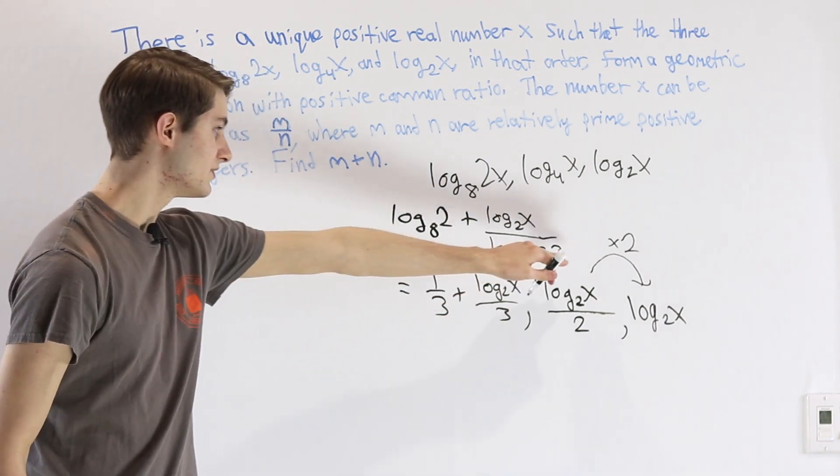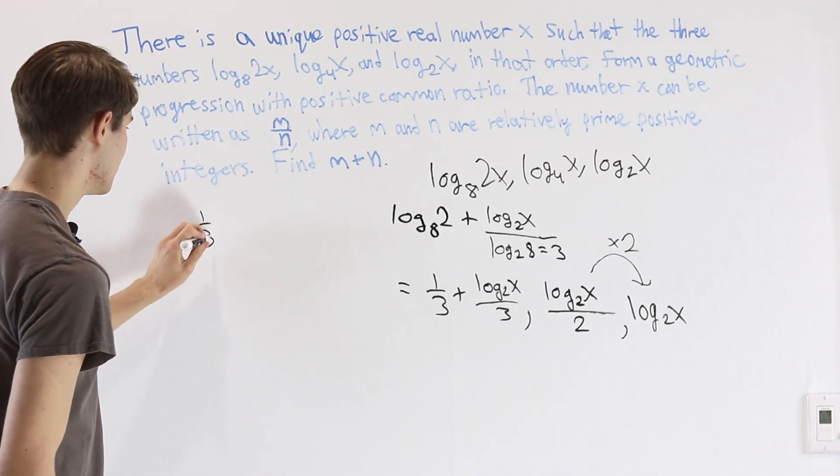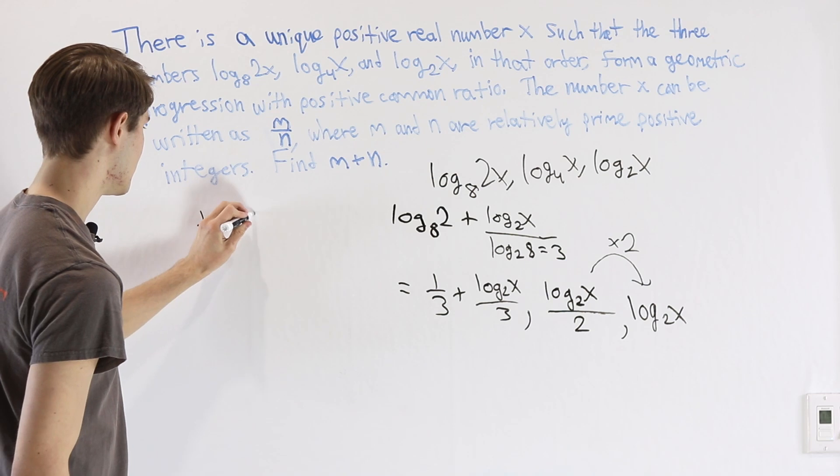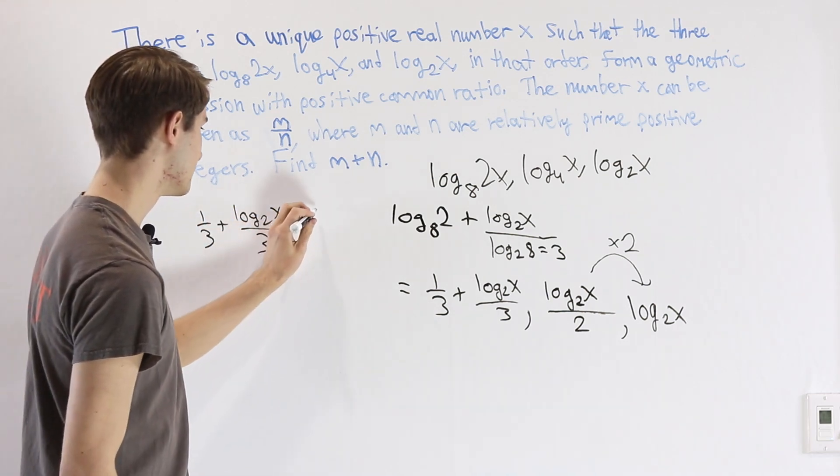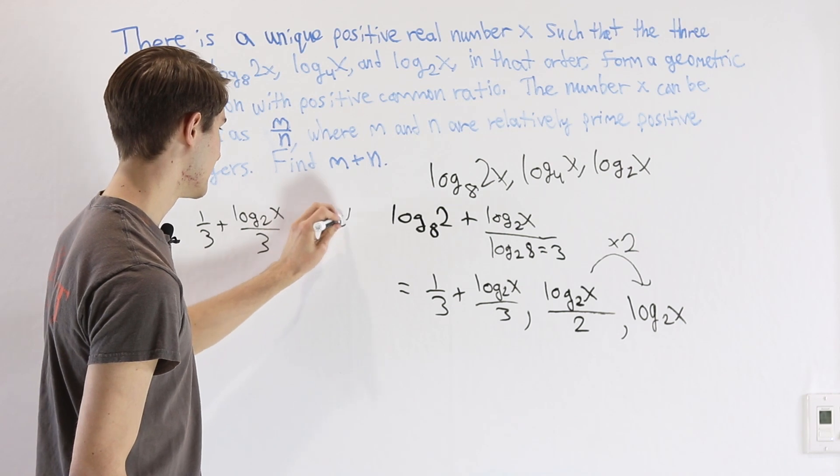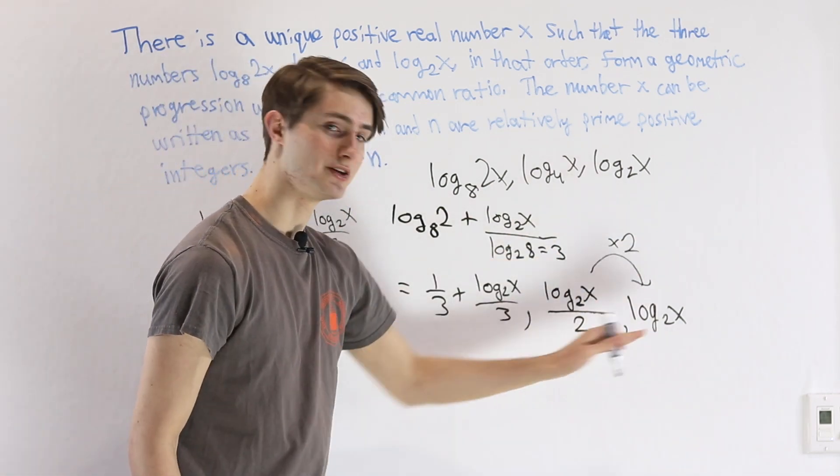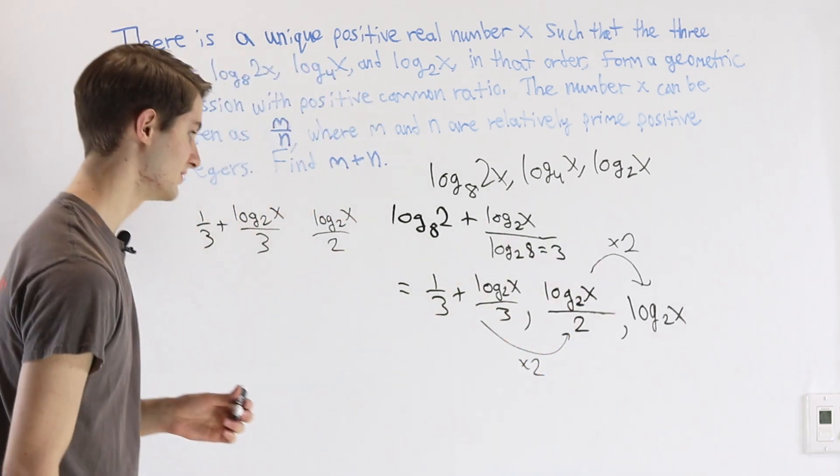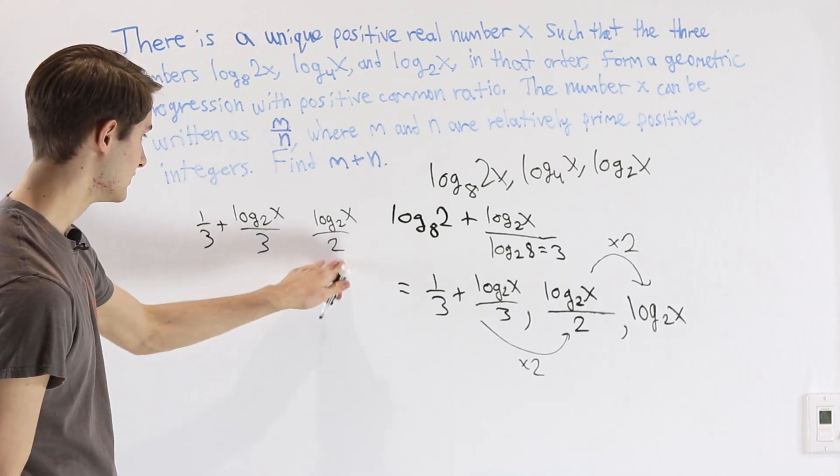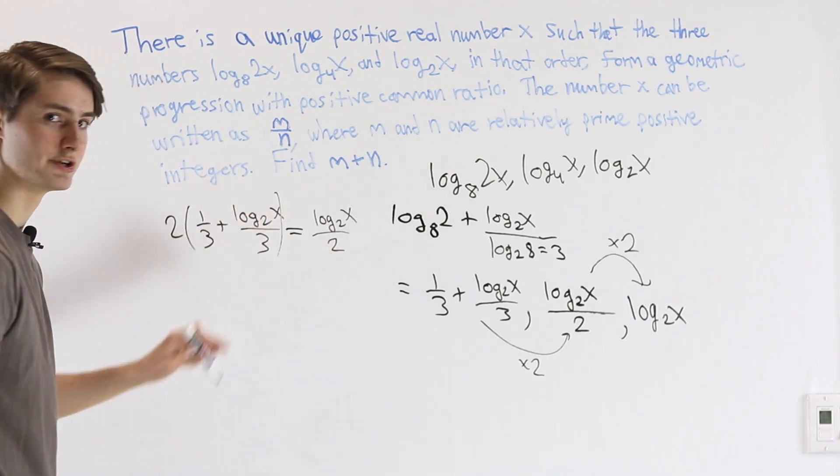In order to do that, we can use the fact that the common ratio is 2. So our first term is 1/3 plus log base 2 of x over 3, and our second term is log base 2 of x over 2. Since we multiplied by 2 to go from the second to the third term, we also must have multiplied by 2 to go from the first to the second term, which means this term over here must be double that first term.